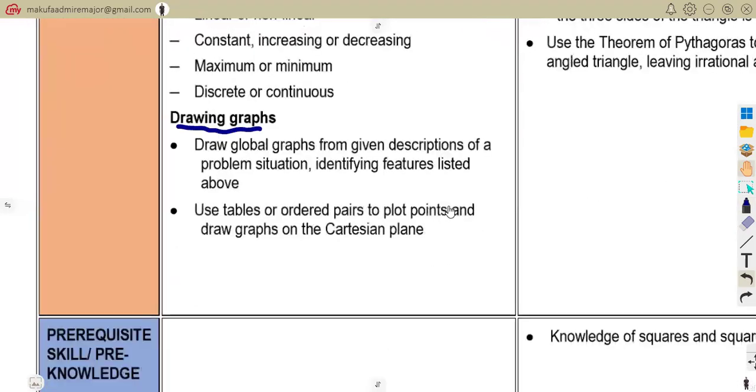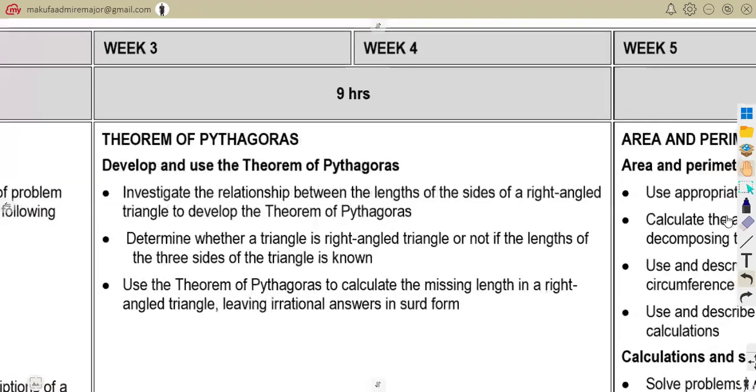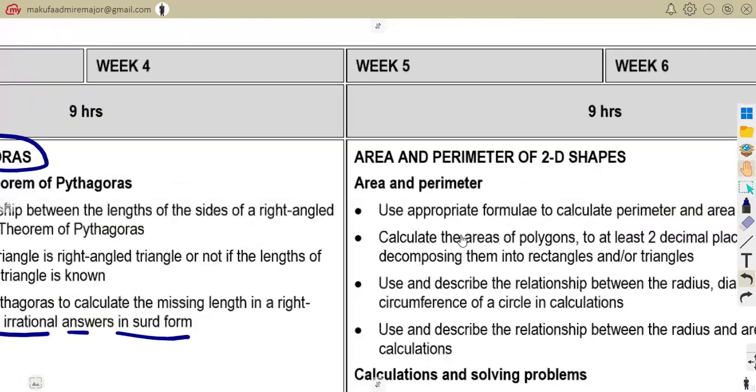The second part is the theorem of Pythagoras. Working with the theorem of Pythagoras from our right angle triangle, working with problems where we need to leave irrational answers in surd form. Just make sure you're well equipped for revision.